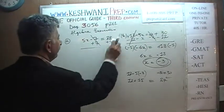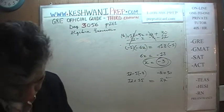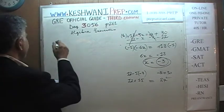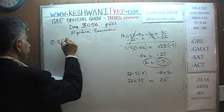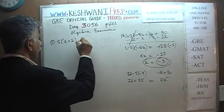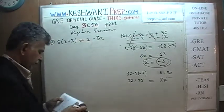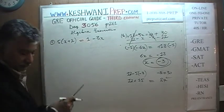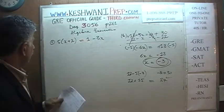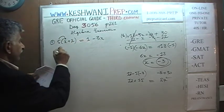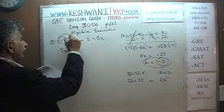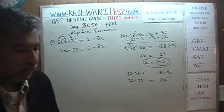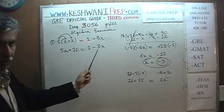Let's look at part c. We are told 5 times (x plus 2) equals 1 minus 3x. Opening the parenthesis, we get 5x plus 10 equals 1 minus 3x. Now we can worry about bringing all unknowns to one side and constants to the other side.